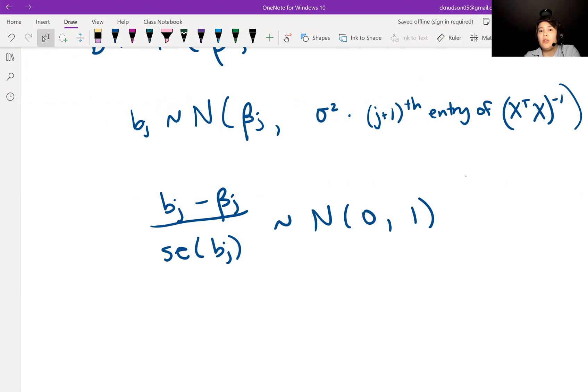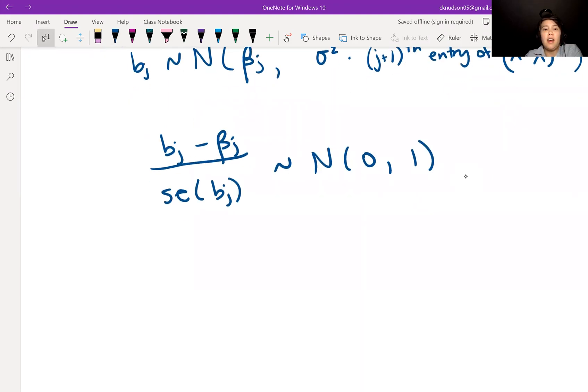If we need to go ahead and sub in mean squared error for sigma squared, because most of the time we will not know what sigma squared is, then BJ minus beta J over the standard error of beta J will have a T distribution with N minus K minus one degrees of freedom.